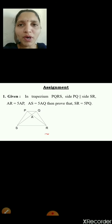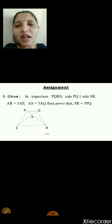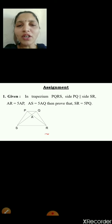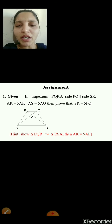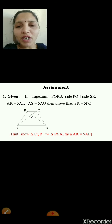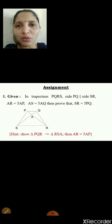Now let's move to the assignment. In trapezium PQRS, side PQ is parallel to side SR, and AR equals 5AP, AS equals 5AQ. You have to prove that SR equals 5PQ. Hint: first show that triangle PQA is similar to triangle RSA, then use the ratio of corresponding sides. Substituting AR equals 5AP will allow you to prove SR equals 5PQ. I hope you all understood this session. Thanks for watching, see you in the next video.